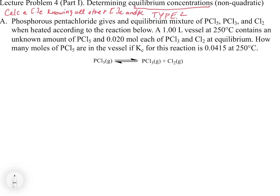What distinguishes a Type 1 from a Type 2 is that you're given a value for K. The Kc for this reaction is 0.0415, and notice there are no units. The question asks how many moles of PCl5 are in the vessel at equilibrium — it's asking for information about one of the reactants or products at equilibrium, whether it's a concentration or number of moles.